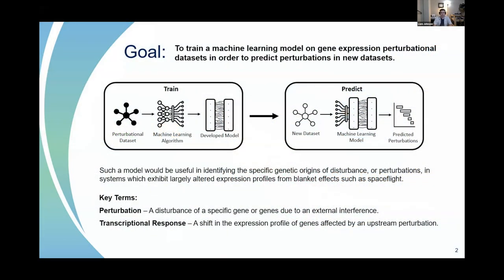The goal essentially is to train a model on these gene expression perturbational datasets in order to predict perturbations in new datasets. A model like this would be useful in identifying specific genetic origins of disturbance or perturbations in systems which exhibit largely altered expression profiles from blanket effects like spaceflight.